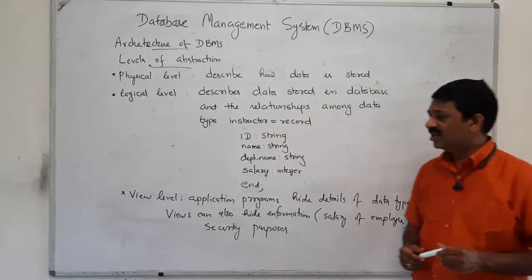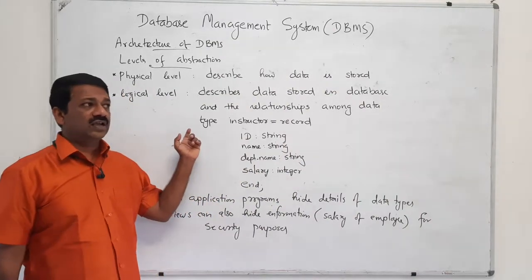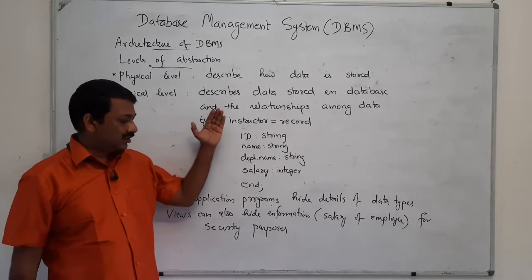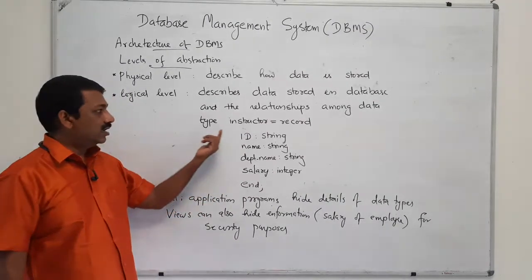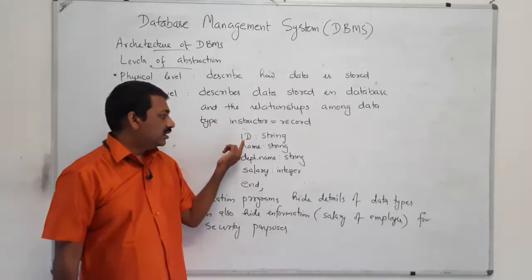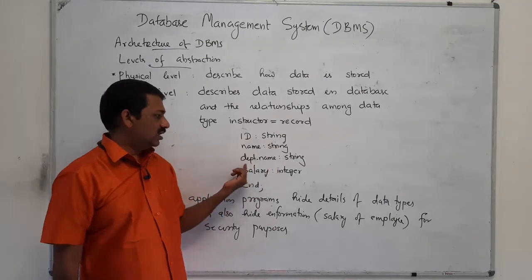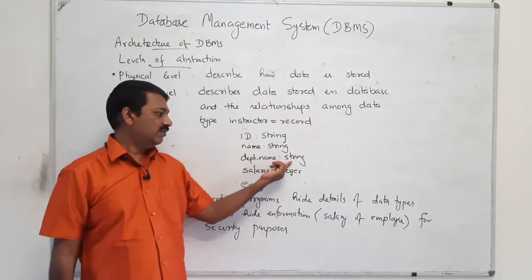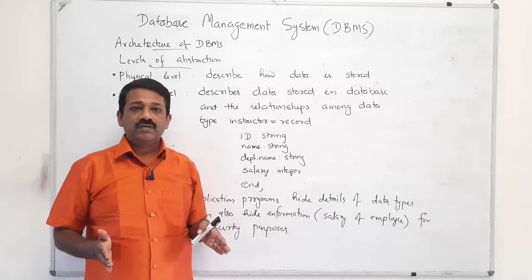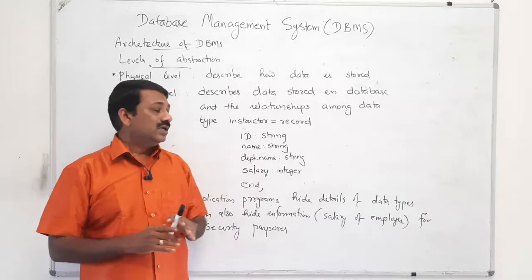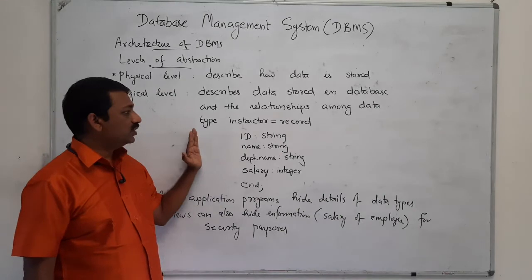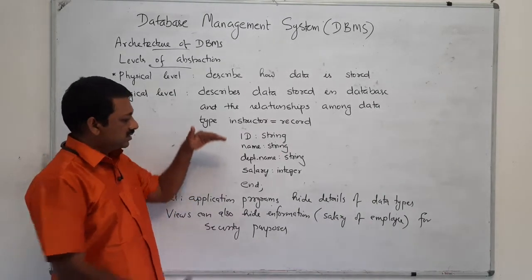The second level is the logical level. At the logical level, a programmer defines records. For example, suppose you want to have an instructor record. The instructor record has an ID, which is a string, and a name, which is also a string, then the department name to which they belong, and the salary. That is the instructor record defined logically.